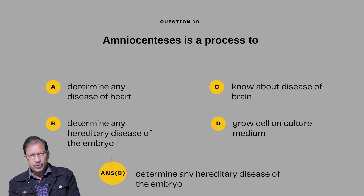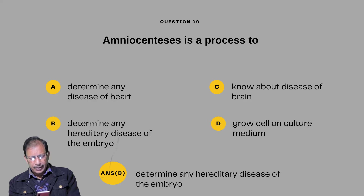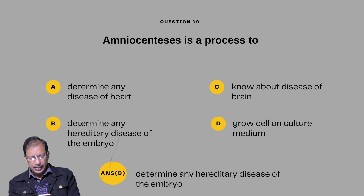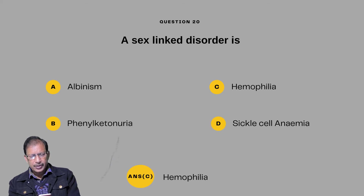Question number nineteen: Amniocentesis is a process to — A: determine any disease of the heart; B: determine any hereditary disease of the embryo; C: know about disease of the brain; D: grow cells on the culture medium. Answer is B — determine any hereditary disease of the embryo. Question number twenty: A sex-linked disorder is — albinism, phenylketonuria, hemophilia, or sickle cell anemia. Answer will be hemophilia.